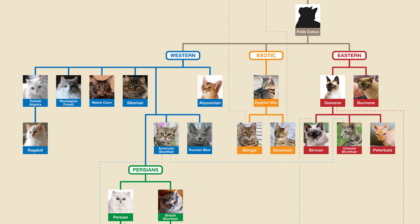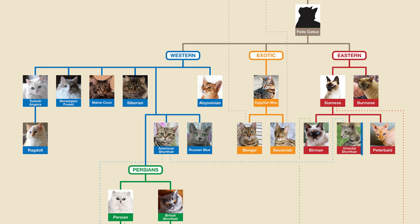Let's start with the eastern branch. If there's one cat breed that almost everyone can name, it is the Siamese, which gets its name because it originated in Thailand, which used to be called Siam. These cats are distinctive because they have triangular faces, blue eyes, a long slender body, and something called point coloration – which means they are mostly light-colored except for their dark face, ears, legs, and tail. They are also one of the most talkative breeds. All of the rest of the eastern breeds are somehow closely related to the Siamese, including the Burmese, the Burman, the Oriental Shorthair, and the Peterbald.